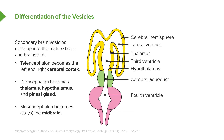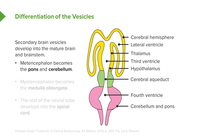The cerebral aqueduct is the portion of the neural canal present within the mesencephalon, which is going to become the midbrain. The fourth ventricle is the remnant of that neural canal present around both the metencephalon and the myelencephalon. The metencephalon will become the pons and the cerebellum, and the myelencephalon is going to become the medulla oblongata.